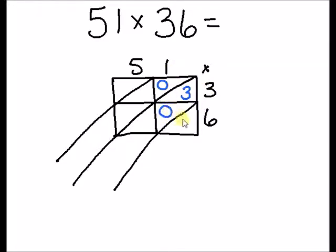1 times 6 is 6. Again put that 0 in to hold it so that it's a two digit number. 5 times 3 is 15 and 6 times 5 is 30.